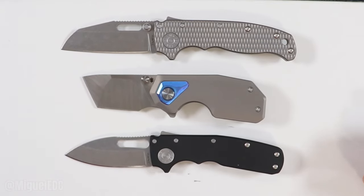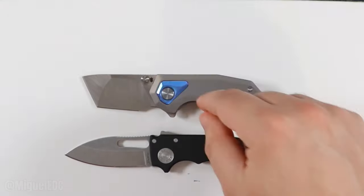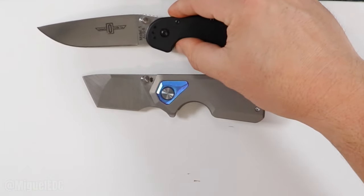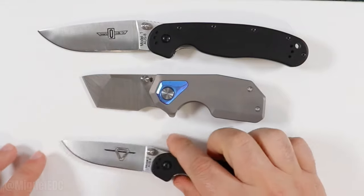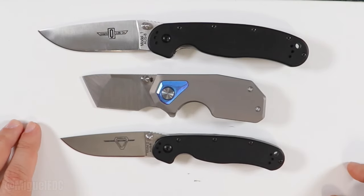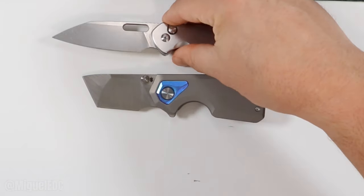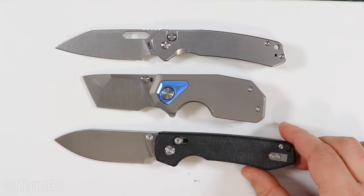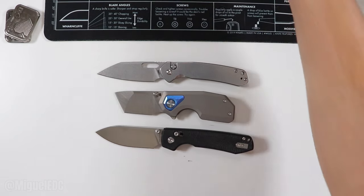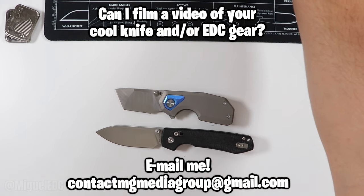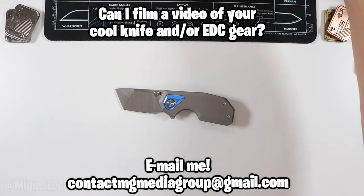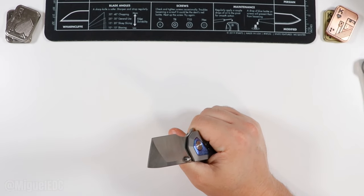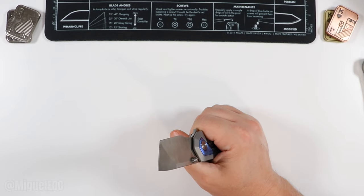CJRB Pyrite. And the Vosteed Raccoon. Yep. So, certainly, I think that about makes a point right there. So, yes, we're dealing with a small form factor EDC knife. And let's just check out the performance here. Let's see how well it cuts. We're going to conduct a very scientific paper cutting method here. So, the first thing I want to do is I'm going to get some slices with this first edge right here.